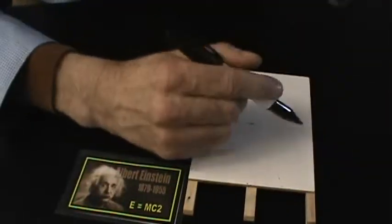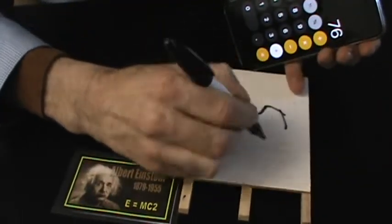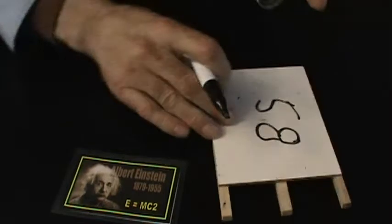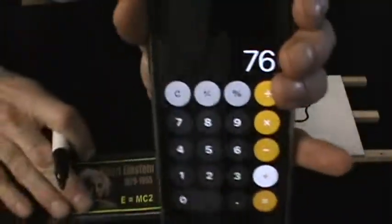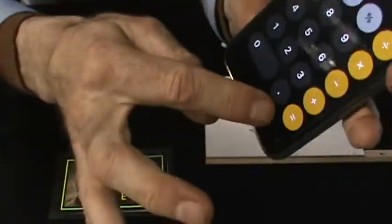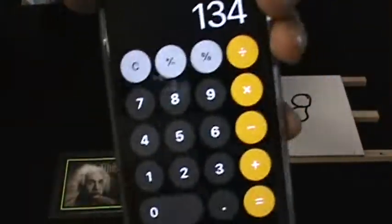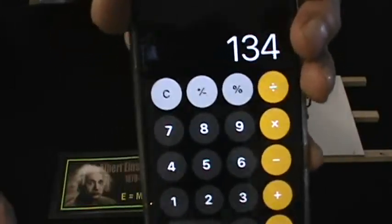So let's say you were thinking of 58. And it could be any number, right? So you got Einstein's age, you hit plus, and now enter your number. And hit equals. Now obviously, your total is going to be different. No big deal.